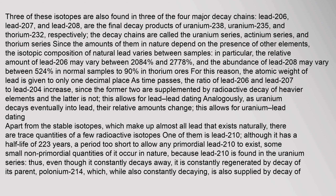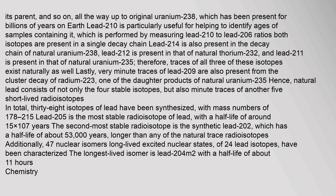As uranium decays eventually into lead, their relative amounts change, allowing for uranium-lead dating. Apart from the stable isotopes, there are trace quantities of a few radioactive isotopes. One of them is lead-210; although it has a half-life of 22.3 years — too short to allow any primordial lead-210 to exist — some small non-primordial quantities occur in nature because lead-210 is found in the uranium series. Even though it constantly decays away, it is constantly regenerated by decay of its parent polonium-214, which is also supplied by decay of its own parent, all the way up to original uranium-238, which has been present for billions of years on Earth.